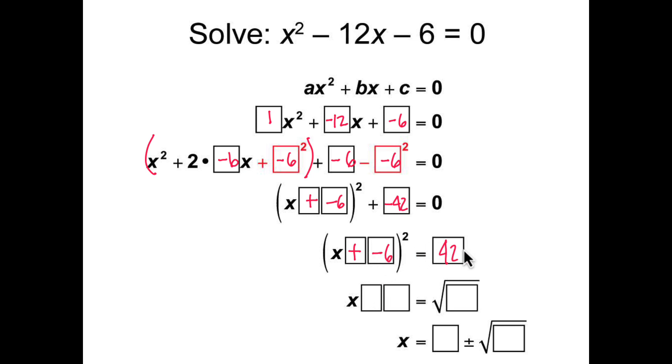Taking the square root of both sides of the equation, we get x plus negative 6 is equal to the square root of 42. And now we can solve for x and find the roots of this equation. Since we have a negative 6 on the left side, solving for x, we get x equals positive 6 plus or minus the square root of 42.